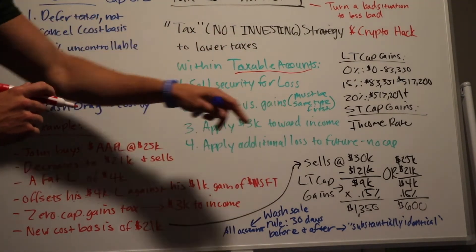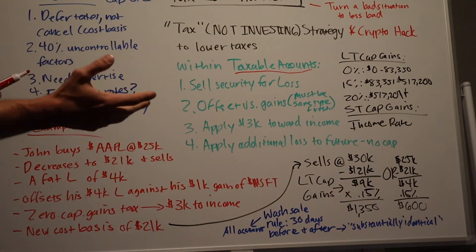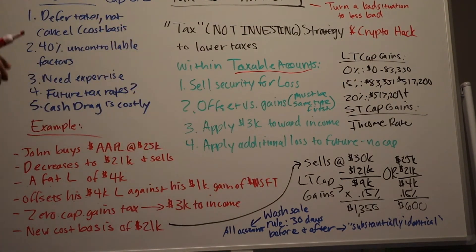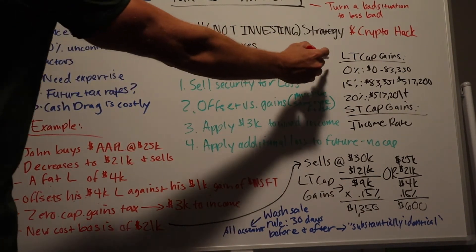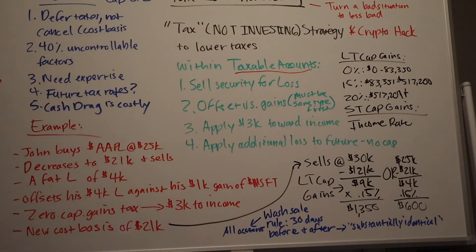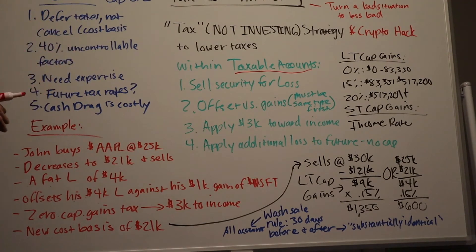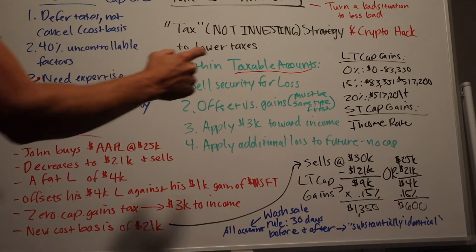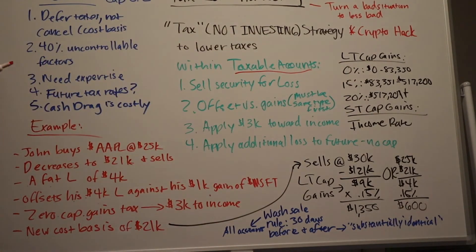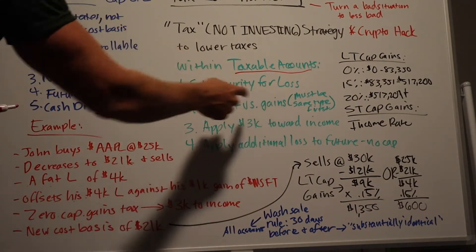Here's a key distinction: the loss must be applied to the same type of capital gains first. We have long-term and short-term capital gains. You have to apply the loss to the same type first, and then secondarily to the opposite type. So if you have a long-term capital loss, it must first be netted against long-term capital gains, and only then can excess be applied to short-term capital gains.